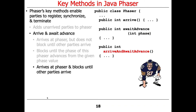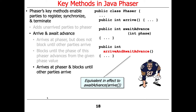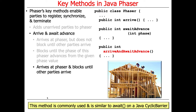The most common method is arriveAndAwaitAdvance(). It arrives at the phaser — saying 'I'm here, I'm ready to do my work' — and then blocks until the other parties arrive, waiting for the rest of the work crew. This is equivalent to calling arrive() followed by awaitAdvance(), since arrive() returns the phase number and passes that to awaitAdvance(). This is by far the most common thing to do, and it's very similar to await() on a Java cyclic barrier.